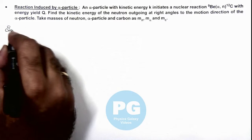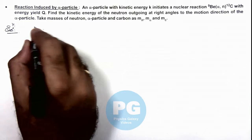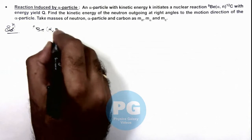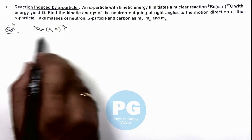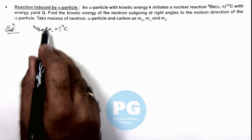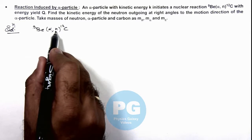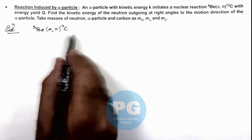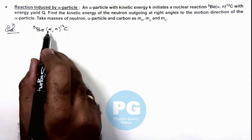In the solution, first we need to understand the way the equation is written. This reaction is written in the form Be(α, n)C. Whenever a nuclear reaction is written in this form, such reactions are called induced reactions, where the first particle inside the bracket attacks on the outside particle, the second particle inside the bracket moves out, and the residual nucleus is the last particle. This is how an induced nuclear reaction is written, and the first bracketed particle is called the induction particle.